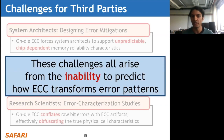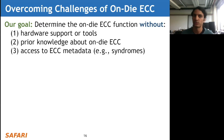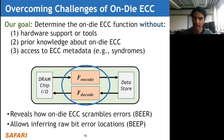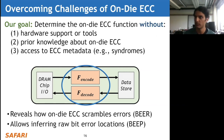These challenges all arise from the inability to predict how ECC transforms error patterns. To overcome them, our goal is to determine the on-die ECC function without any hardware support or tools, prior knowledge about on-die ECC, or access to ECC metadata such as the internal mathematics or error syndromes it generates. In the context of a real DRAM chip, this means knowing exactly what's happening inside the encoder and decoder, which would reveal how on-die ECC is scrambling errors and allow us to infer raw bit error locations behind the ECC mechanism.